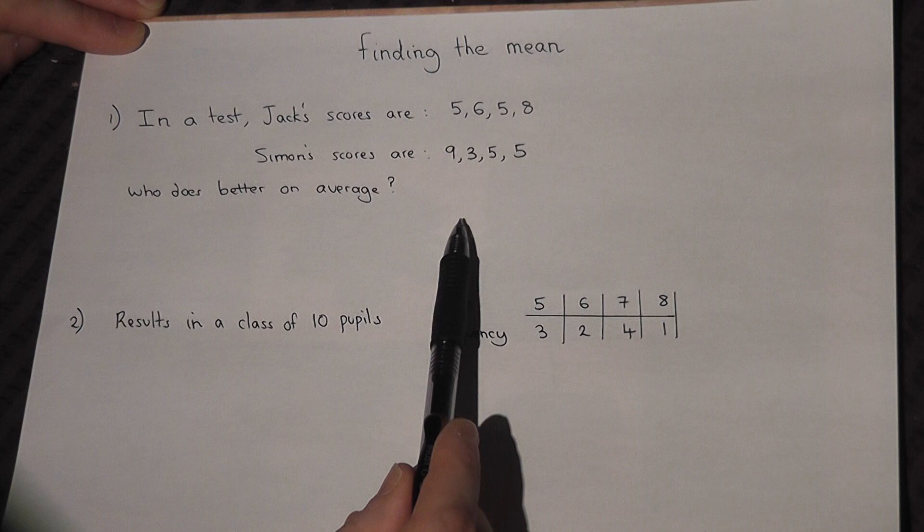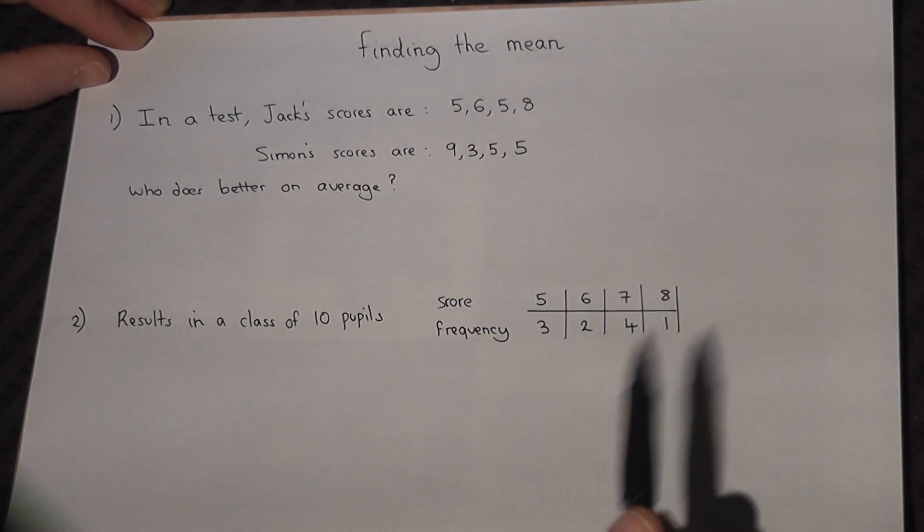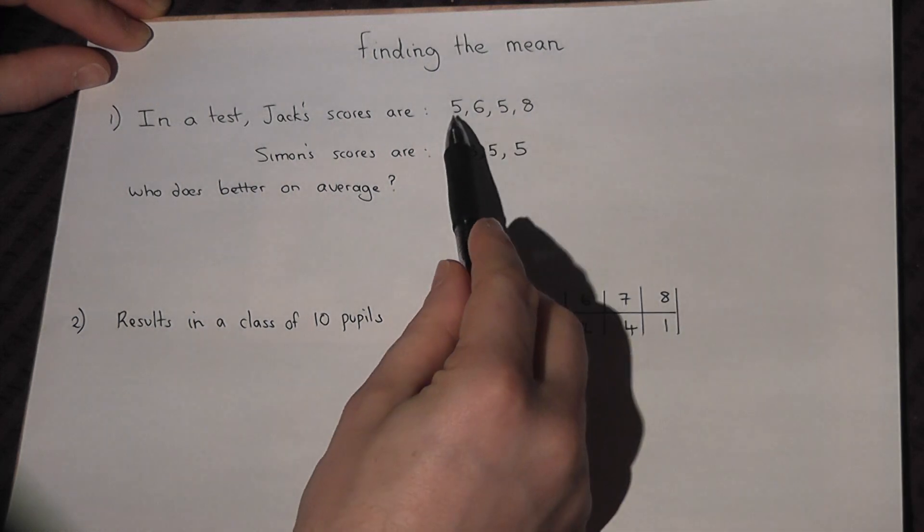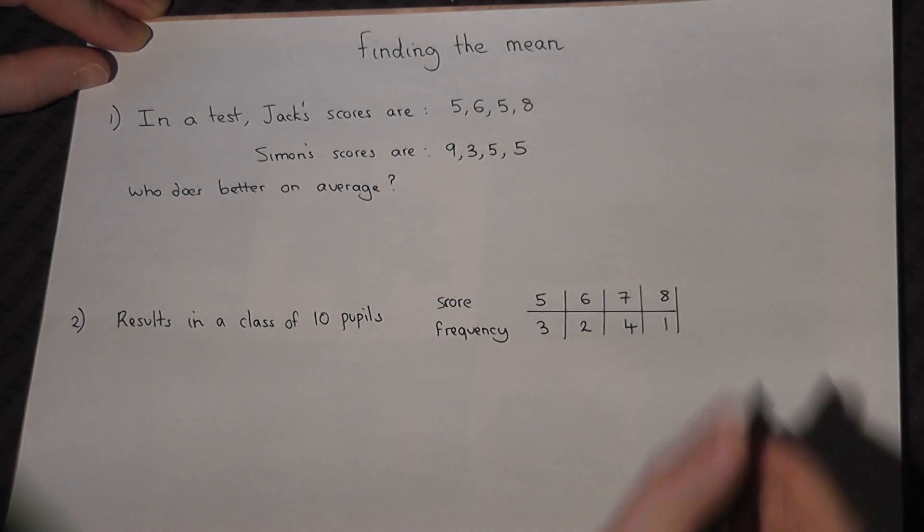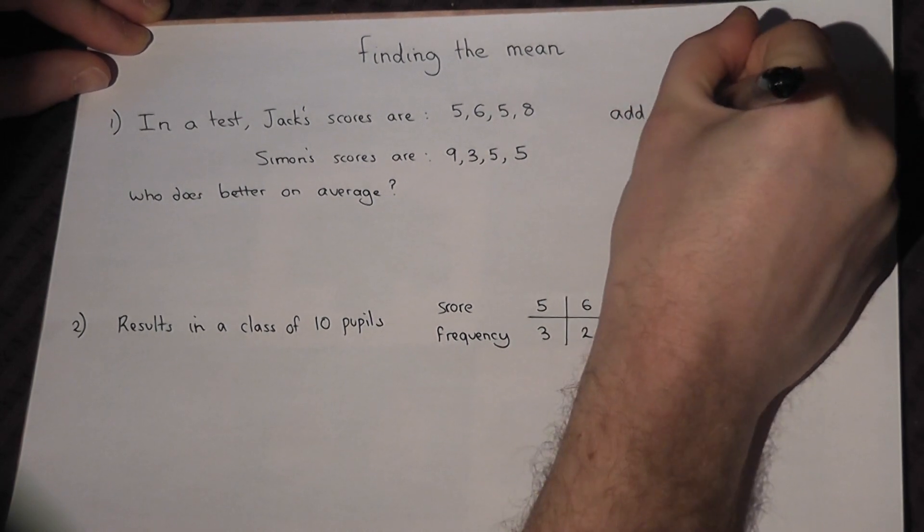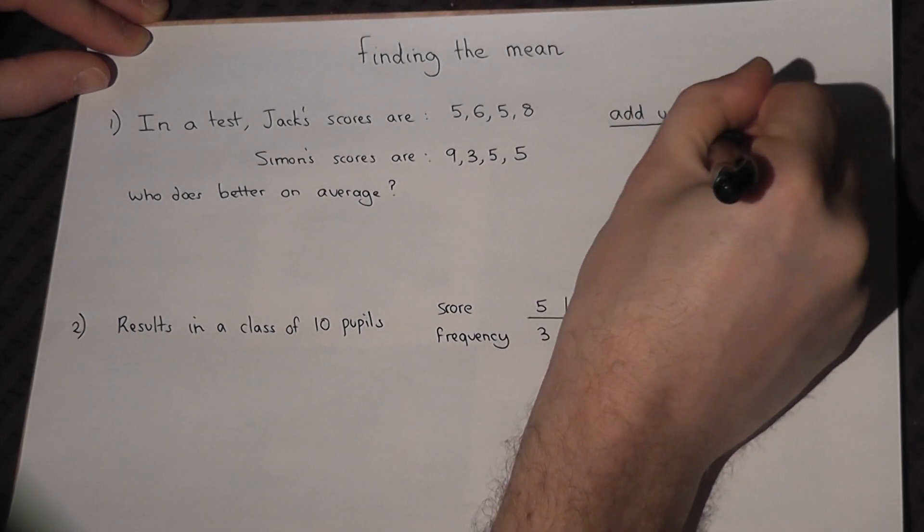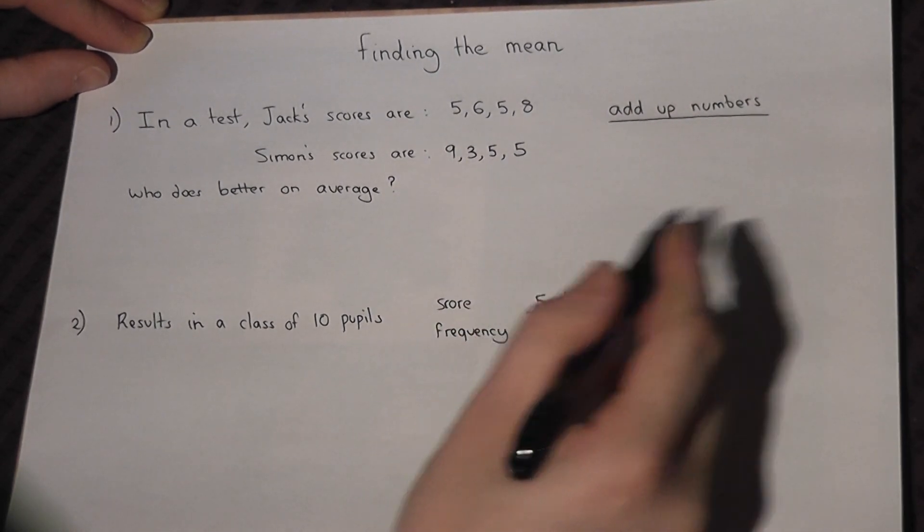Now one way to do this is to find what's called the mean, and to do that we have to add up each of the scores, add up the numbers, and then we divide by the number of numbers.